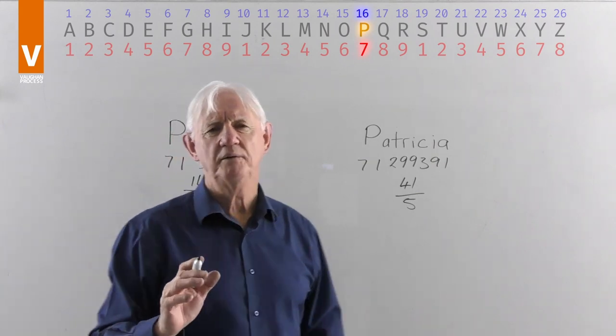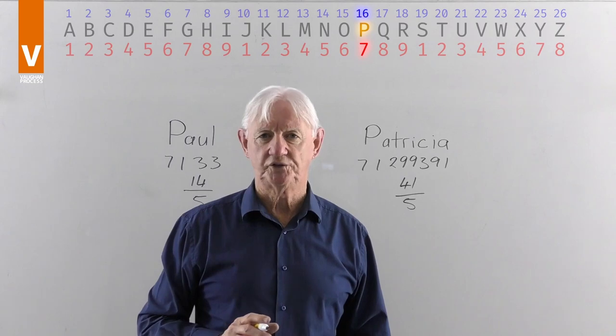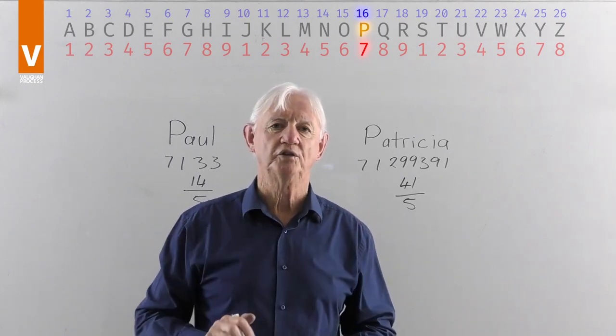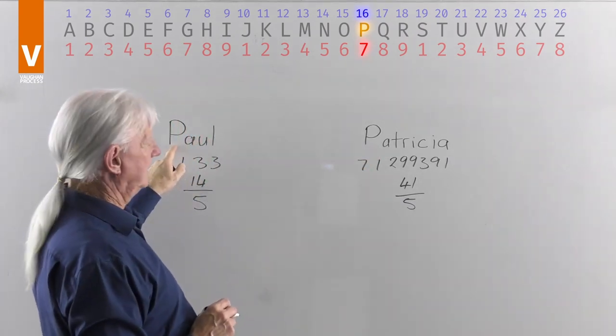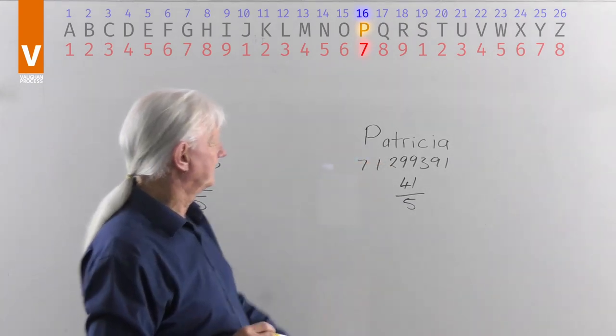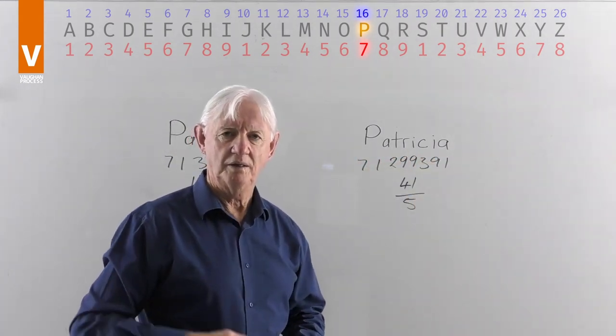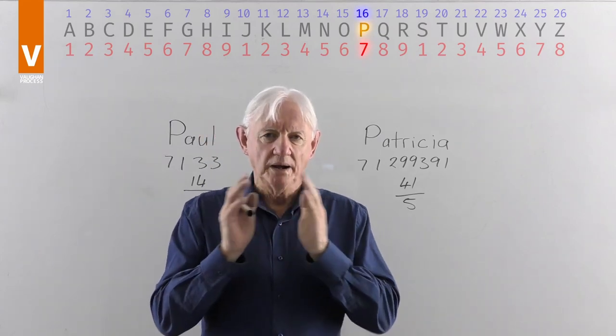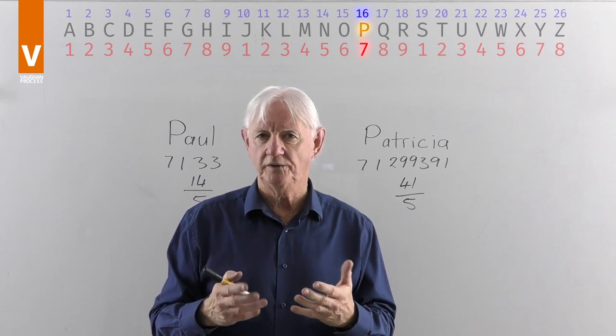Now, they may have similar numbers. They don't have similar letters in general. Got a few the same. The A, P and A here. No L and no U. So, Patricia has got more in there than Paul has in there. The more letters there are in a person's name, the more tools they have in their toolkit.